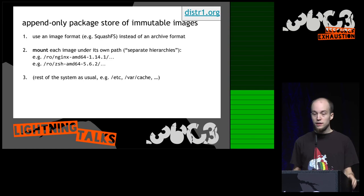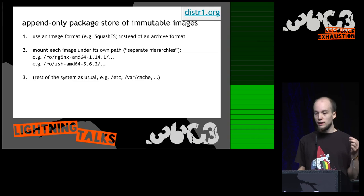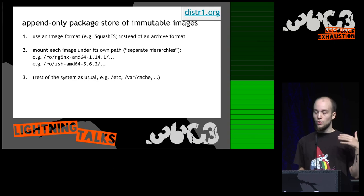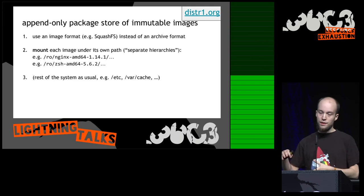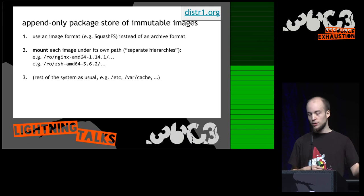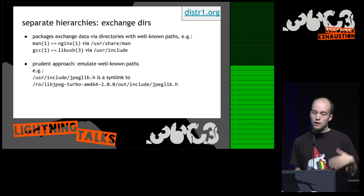Compared to the previous slide's ~1 MB/s, this is a really big contrast. The key idea is an append-only package store of immutable images. We use an image format — squashfs in our case — instead of an archive format. Each image is mounted under its own path, a concept we call 'separate hierarchies.' For example, nginx would be at /ro/nginx followed by the fully qualified version number. The rest of the system is laid out as usual — /etc for configuration, /var, and so on.